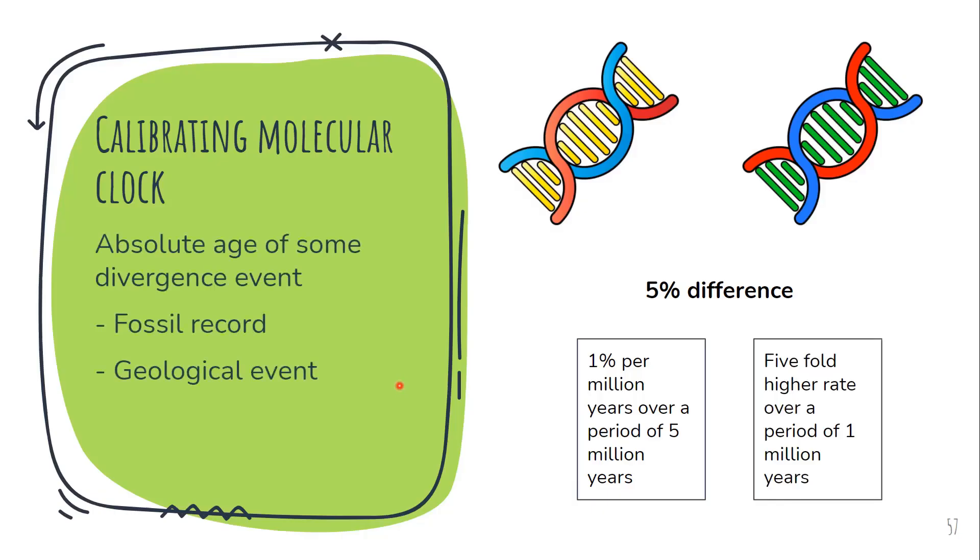So here the rate of mutation is faster. However, the number of years taken is slow. In the first example, the time taken was more and the rate was lower. So either of this could happen.